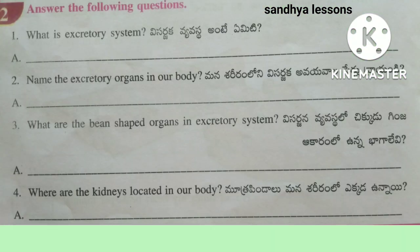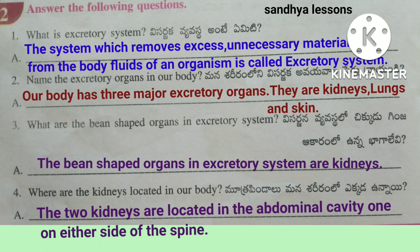Second, answer the following questions. First question: What is the excretory system? The system which removes excess and unnecessary material from the body fluids of an organism is called the excretory system. Second question: Name the excretory organs in our body. Our body has three major excretory organs — kidneys, lungs, and skin.